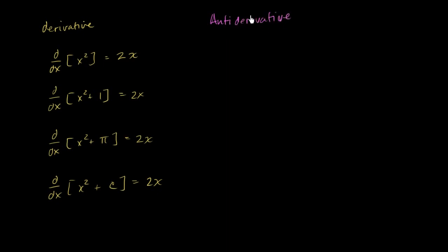And one way to think about it is we're doing the opposite of the derivative operator. In the derivative operator, you get an expression and you find its derivative. Now what we want to do is, given some expression, we want to find what it could be the derivative of.